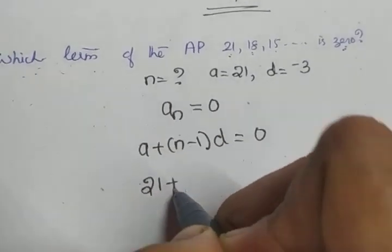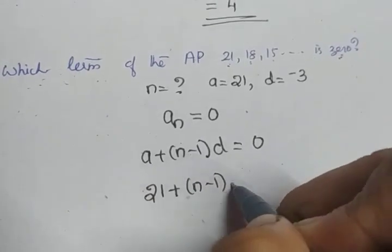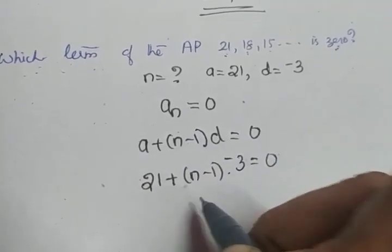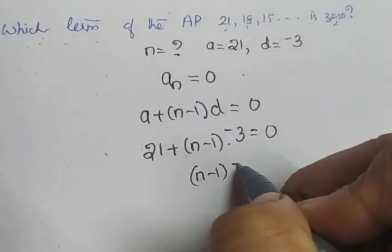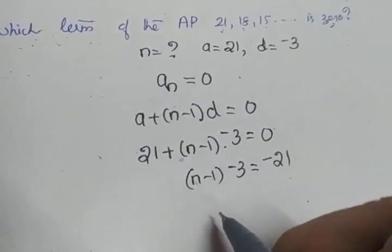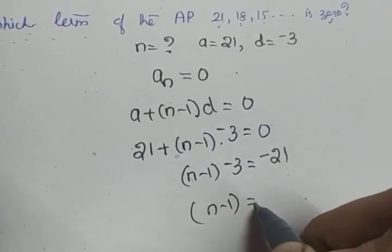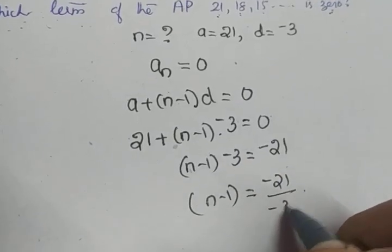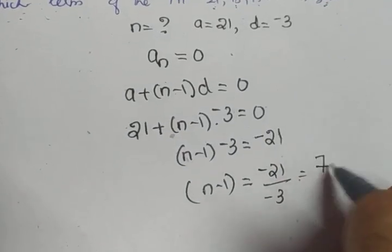What is a? a is 21 plus (n-1) into d is minus 3 equals 0. So (n-1) into minus 3 equals, take 21 to the right side, minus 21. So (n-1) equals minus 21 by minus 3 which gives you the value positive 7.